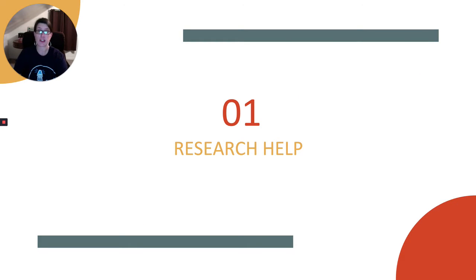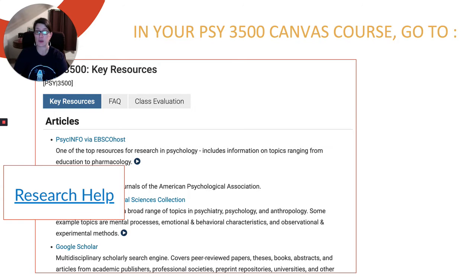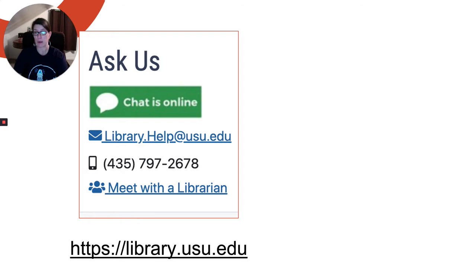There are several ways you can get research help. In your Psych 3500 Canvas course, you can go directly to the research help tab. Here you will find suggested resources and a meet with me button, where you can set up a one-on-one conversation with me about your research questions. Once you click on the meet with me button, there's a short form to fill out where you can share what questions you'd like to discuss and what times you're available to meet. The meet with me or meet with a librarian feature is also available on the library homepage under the Ask Us heading at library.usu.edu.